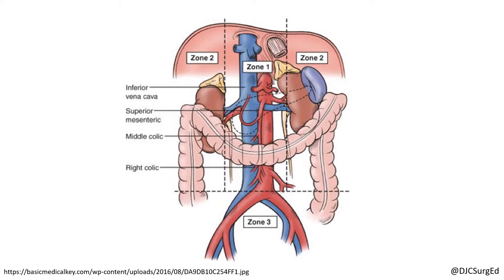The retroperitoneum is divided into three zones. Zone one is central in location, zone two is lateral, and zone three is the pelvic retroperitoneum.